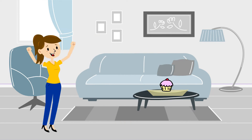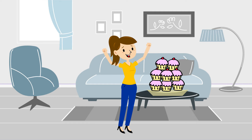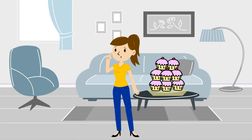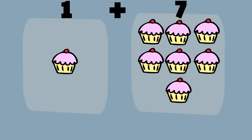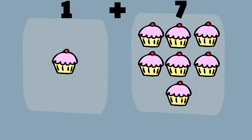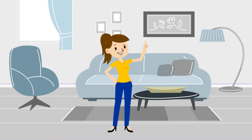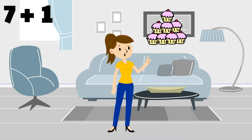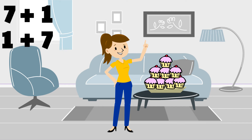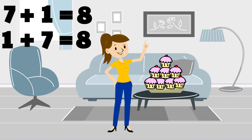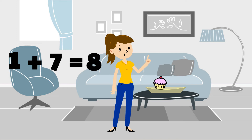Let's say that Jen baked one cupcake for herself first, and then baked seven more cupcakes later for her friends. How many cupcakes did she bake? Can you try to guess? That's one plus seven. That's right — she still baked eight cupcakes in total. This is because seven plus one and one plus seven are the same; their numbers are just switched, but both are still equal to eight.